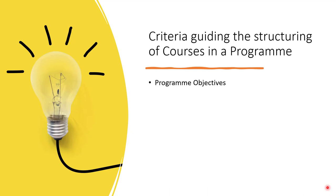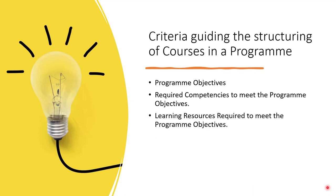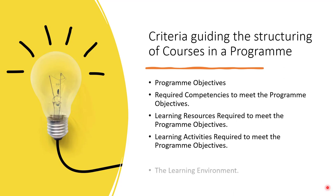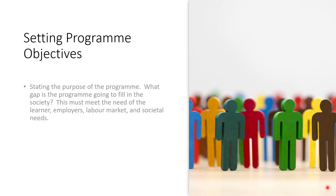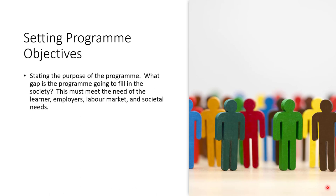Now let's look at the criteria guiding the structuring of courses in a program. First and foremost, we look at the program objective and the required competencies to meet it. We also need to come up with the learning resources and learning activities required, and finally we need to define the learning environment where the program is going to run. When working with program objectives, the first thing you need to do is define the purpose of the program, because without the purpose you will not be able to derive the objective.